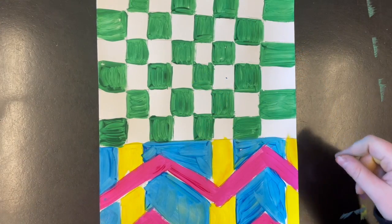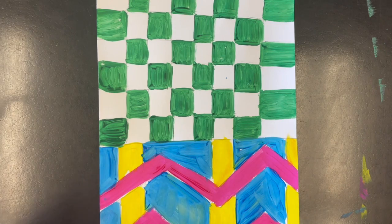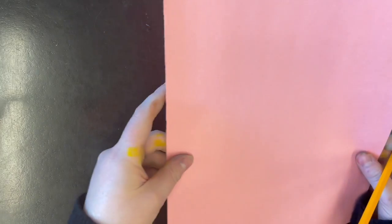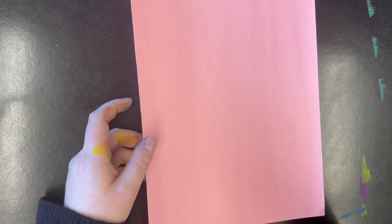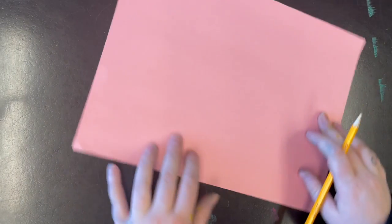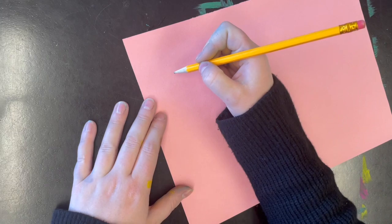Once your background is done being painted, you're going to go up to the windowsill and pick yourself a new piece of paper, any color you want. This piece of paper is going to be for your cup and your saucer. I'm going to turn it sideways and first I'm going to draw my cup.